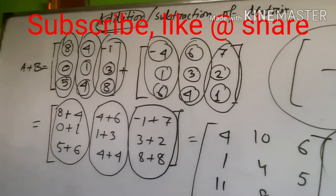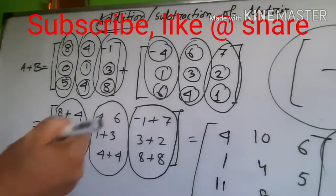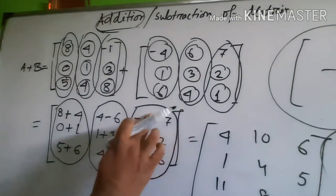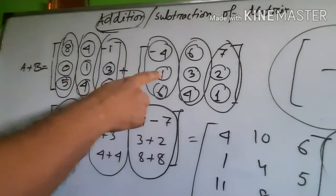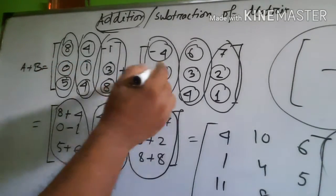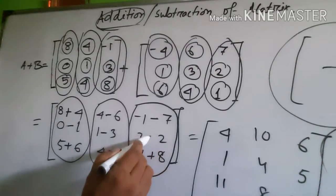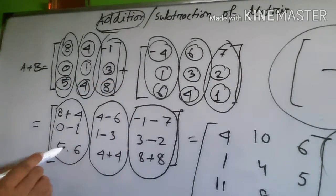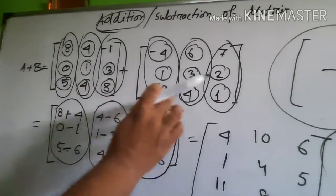Eight plus four. And four minus six, minus minus six. And minus minus minus seven. And zero minus one — this is minus. One minus three — this is minus. Three minus two — this is minus. And five minus six — this is minus. Four minus four — this is minus. Eight minus one.